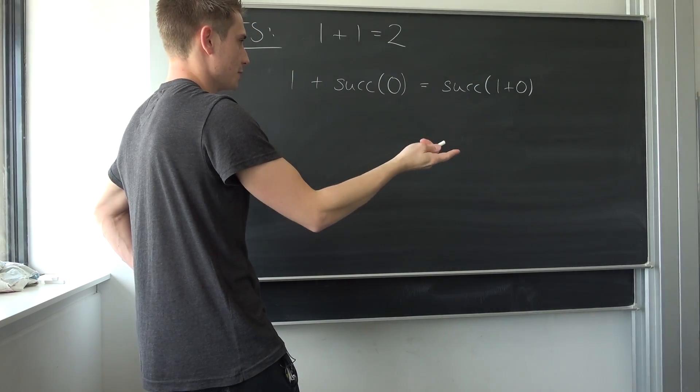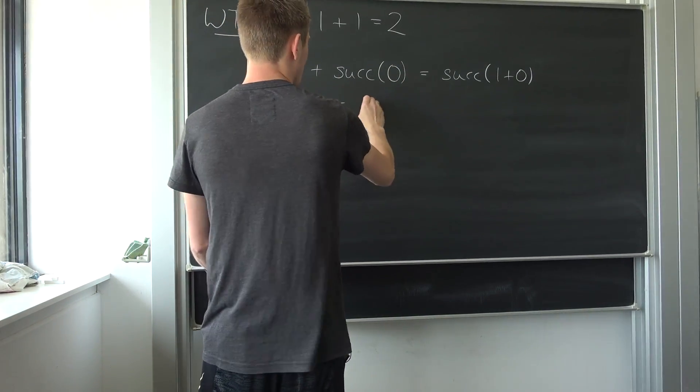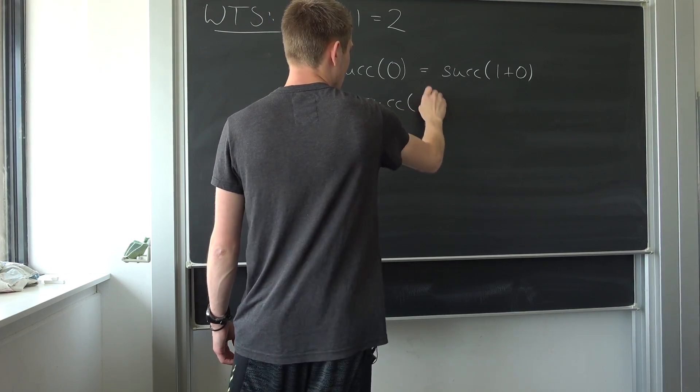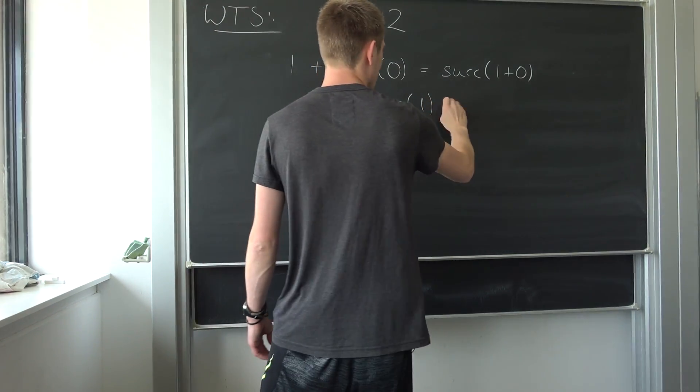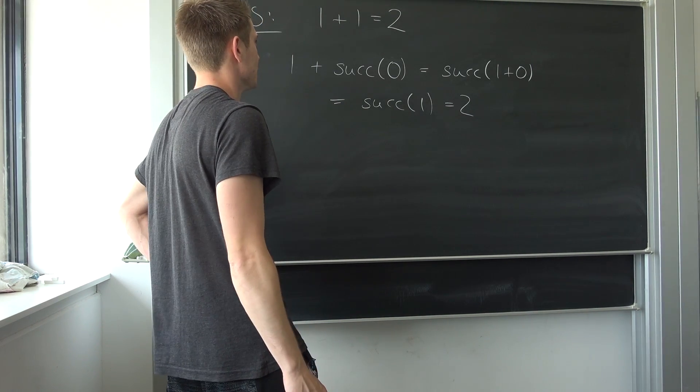But by the Peano axioms and the regular addition, we also know that one plus zero is nothing but one. So that makes the successor of one, and by definition that's two. So that was easy. A direct proof really helps out here.